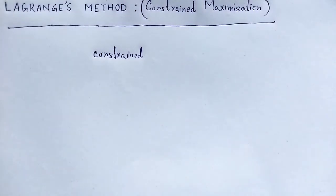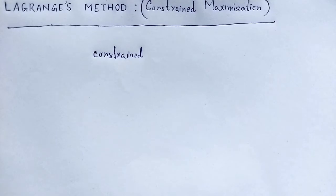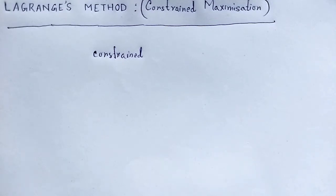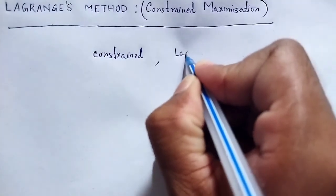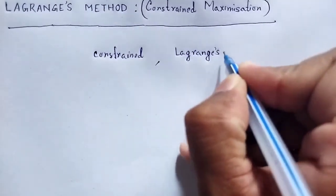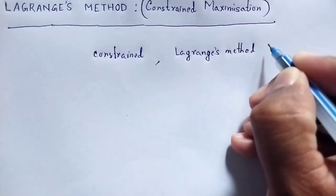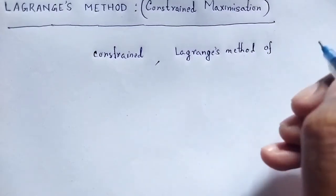That means it is difficult to find out the maximum and minimum of a function — whether it has one variable or more than one variable. These functions are connected with a given relation, and that relation is known as our constraint. The solution method is very popular and convenient, and it is known as Lagrange's method of undetermined multiplier.